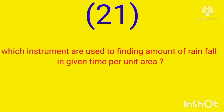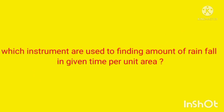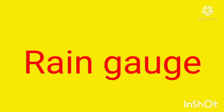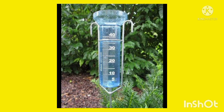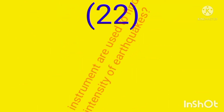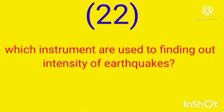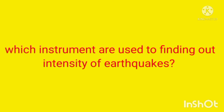Which instrument is used for finding the amount of rainfall in a given time per unit area? Rain gauge. Which instrument is used for finding out the intensity of an earthquake? Seismograph.